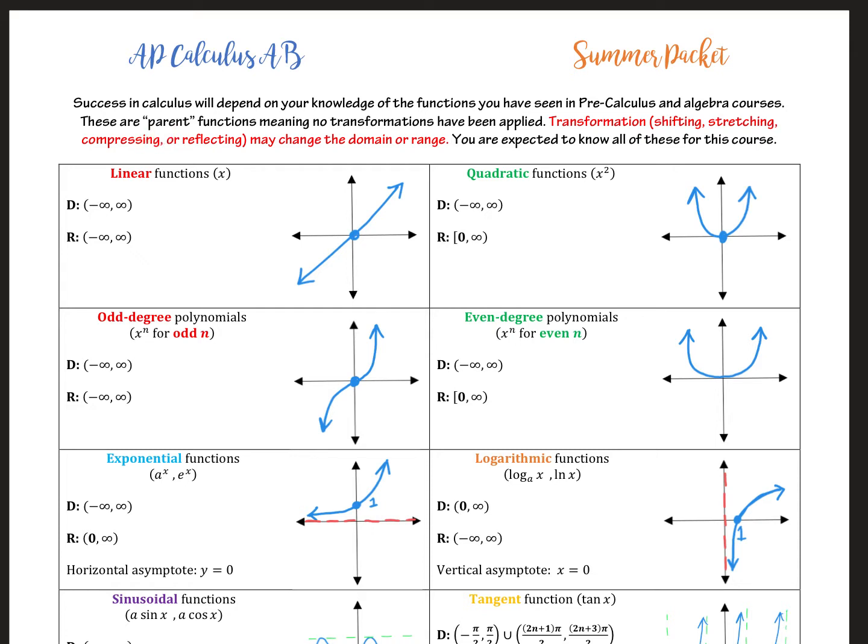So no transformations have been performed on them. For example, we might be able to shift them left or right, shift them up or down, stretch them, compress them, reflect them. And we'll get into all of that. But these are just the basic functions. What do they all look like?